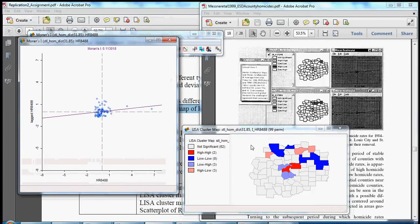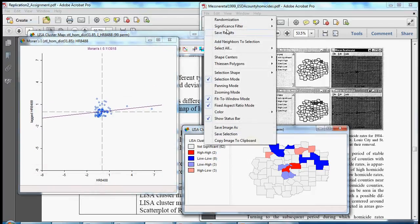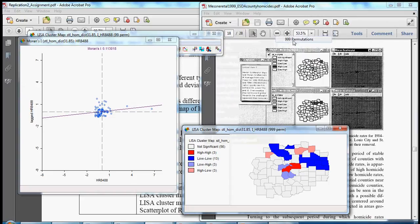And let's right-click on the map and pick 999 permutations, which is what they do. And now we can sit back and interpret here a little bit more, or compare rather.